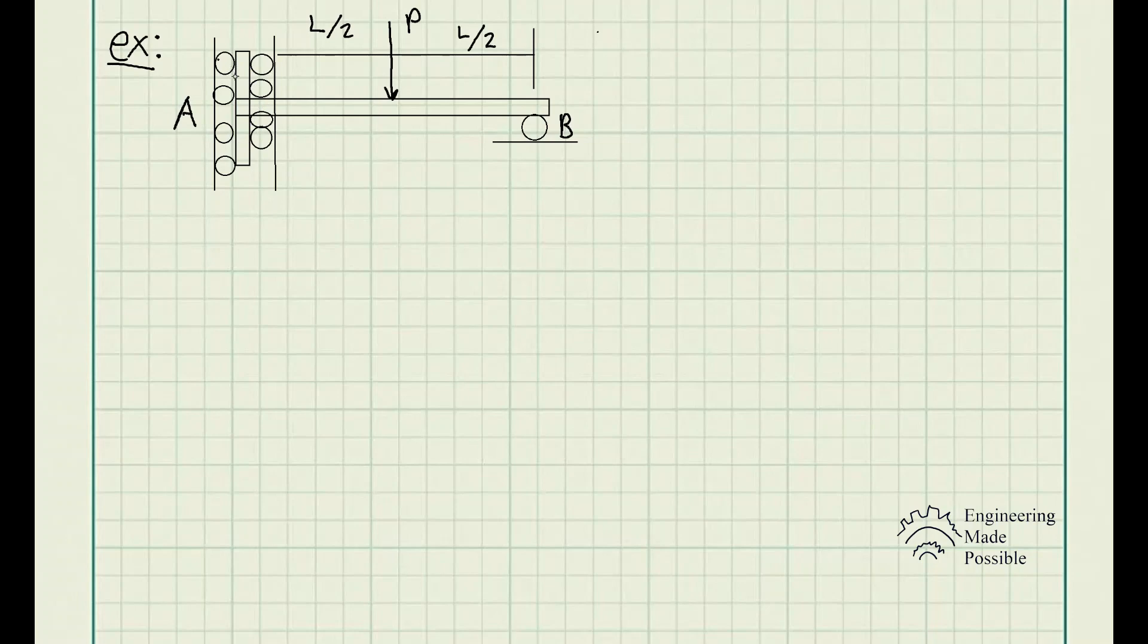On support A, we have lots of rollers holding it in place. At B, we have a roller as well. We have the necessary dimensions. In this case, it's nothing but variables. We have the force P downward right in the middle of that beam, with dimensions L over 2 to get the respective location of this force.